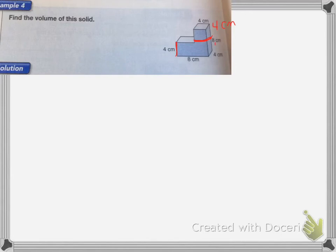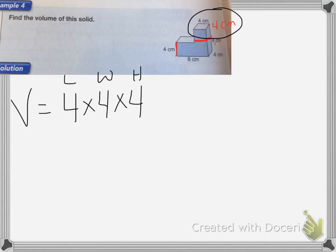Let's find the volume of my cube first. My cube is going to be 4 times 4 times 4, because that's length times width times height, which is equal to 64 centimeters cubed.